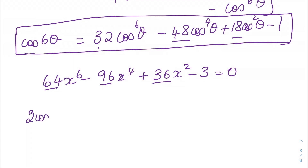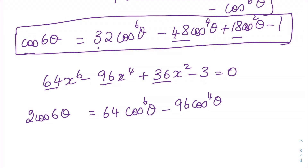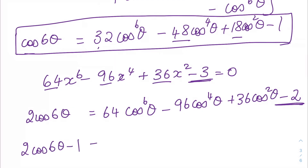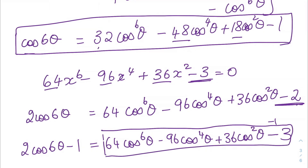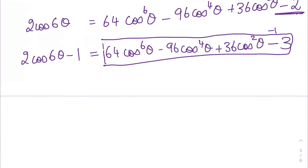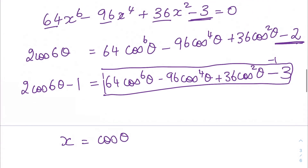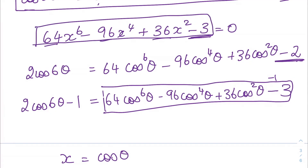So let's consider 2cos 6θ. We have double of 32 which is 64cos⁶θ, then minus 96cos⁴θ, plus 36cos²θ, and double of minus 1 is minus 2. But we need minus 3, so we take away 1 from both sides. So 2cos 6θ − 1 = 64cos⁶θ − 96cos⁴θ + 36cos²θ − 2, and taking away another 1 gives minus 3. Now substituting x = cos θ, I can see the left-hand side of my equation.